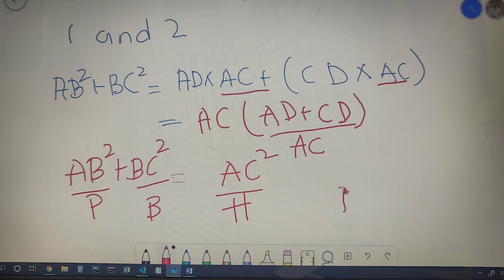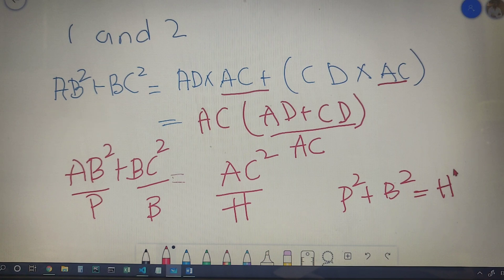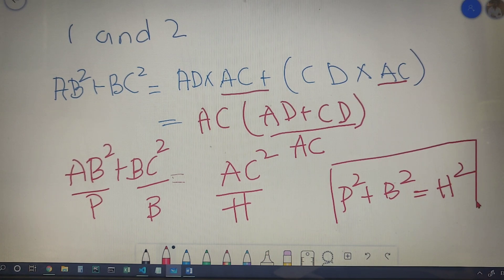So finally I got P square plus B square is equal to H square, and we finally proved Pythagoras theorem.